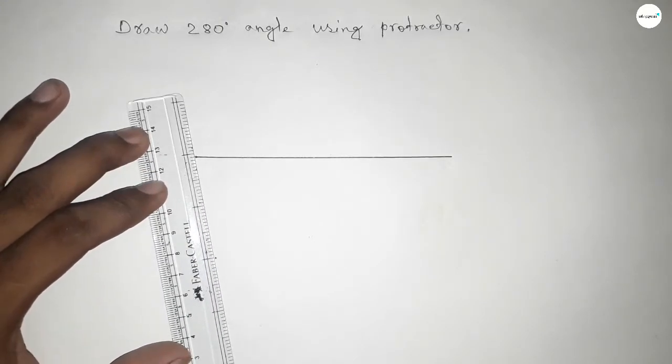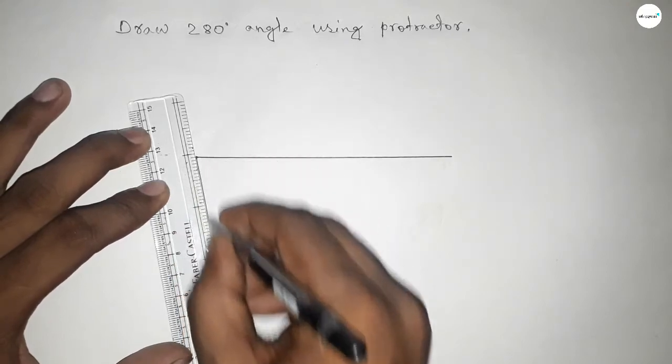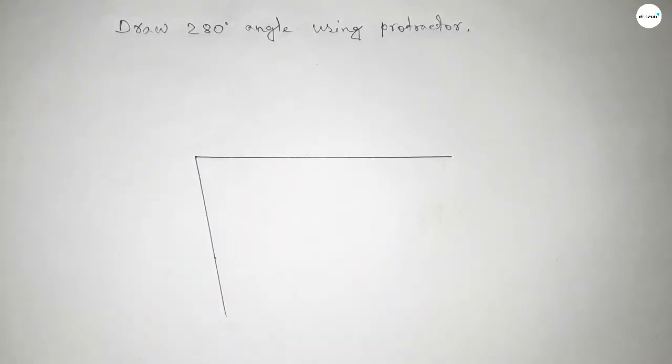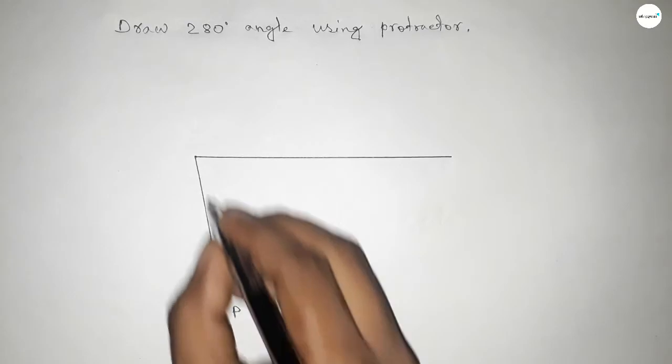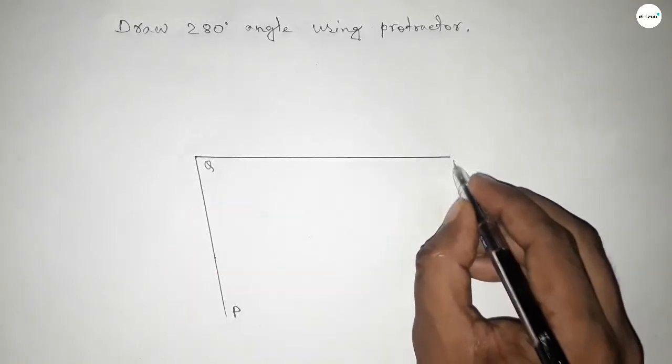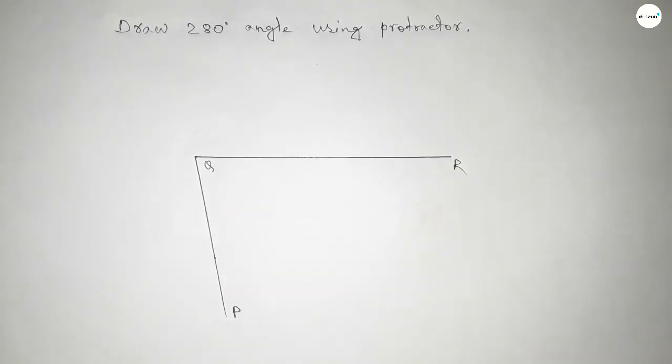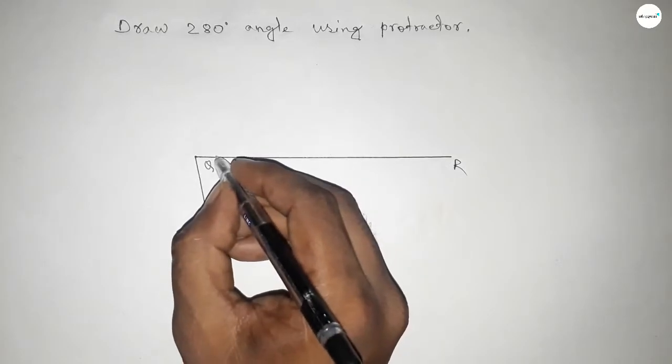So this is P, Q, and R. Angle PQR is our 280 degree angle.